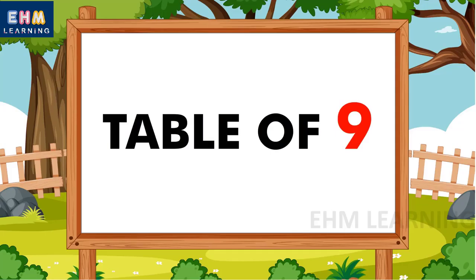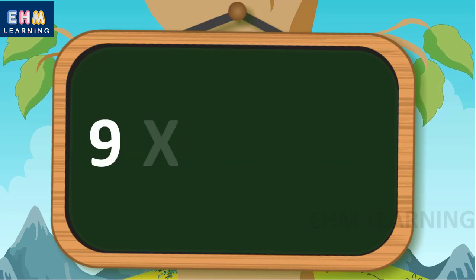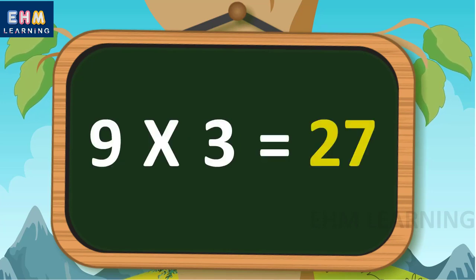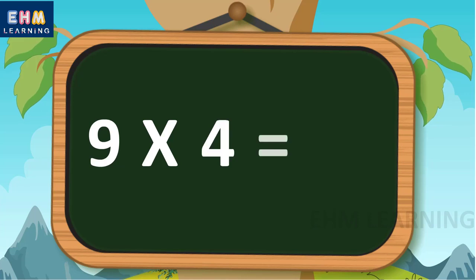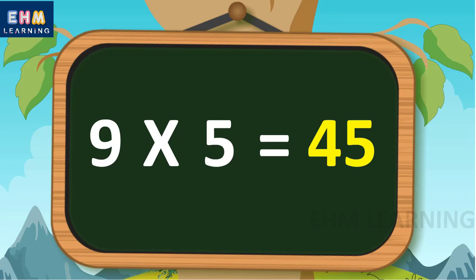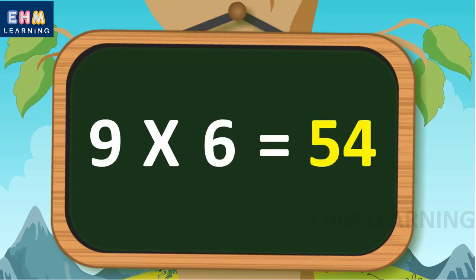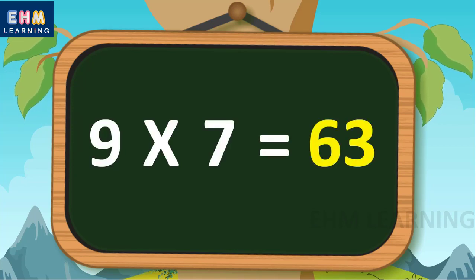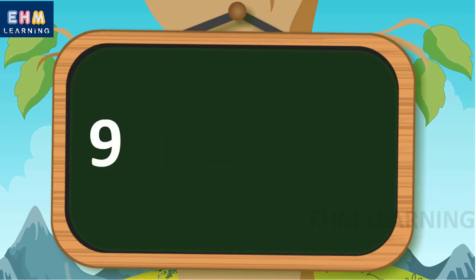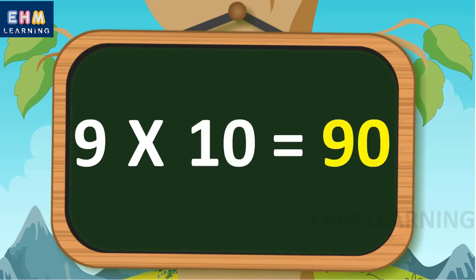Table of nine. Nine ones are nine, nine twos are eighteen, nine threes are twenty-seven, nine fours are thirty-six, nine fives are forty-five, nine sixes are fifty-four, nine sevens are sixty-three, nine eights are seventy-two, nine nines are eighty-one, nine tens are ninety.